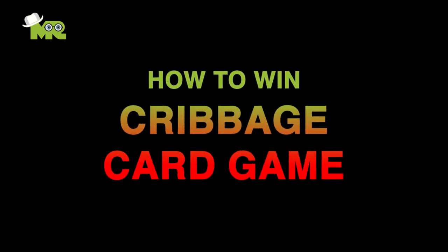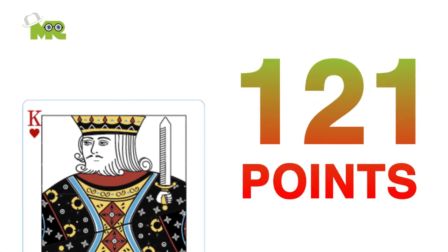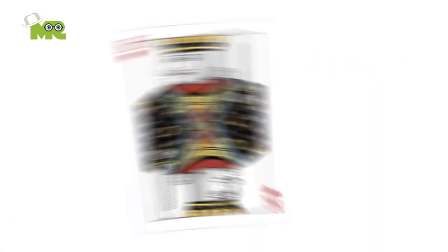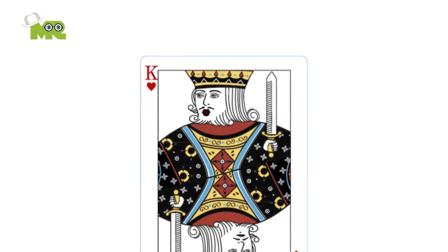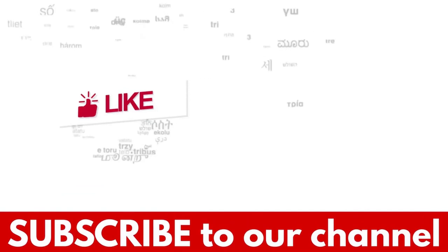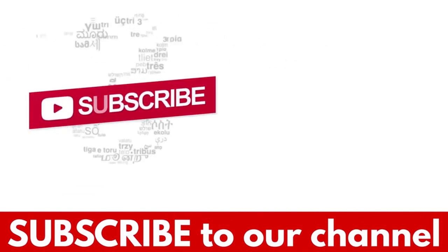How to win cribbage. The first player to reach 121 points in the game is declared as the winner. This is it folks, make sure you thoroughly go through each of the rules of cribbage before playing. Share with us your experiences in the comment section down below. If you like the video, hit the like button and don't forget to subscribe to our YouTube channel.